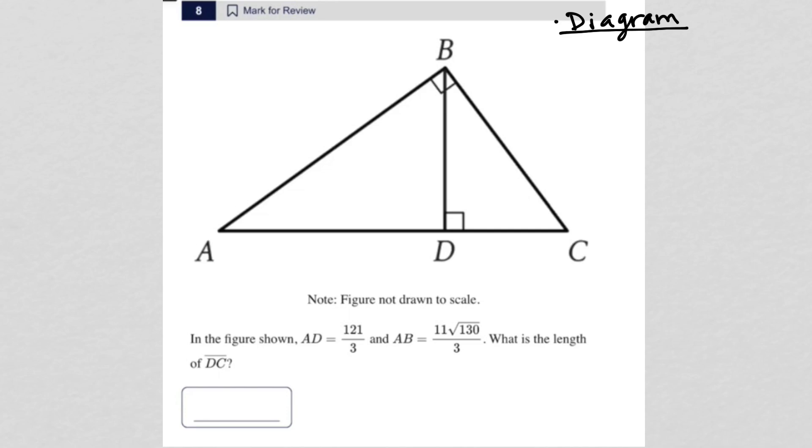I'm going to label these sides before we get started. I'm going to label this as A, B, C, D, and E. So here's what I want you to know.